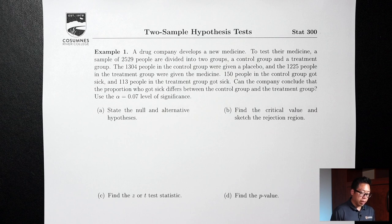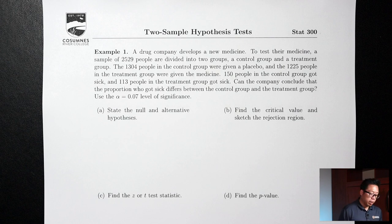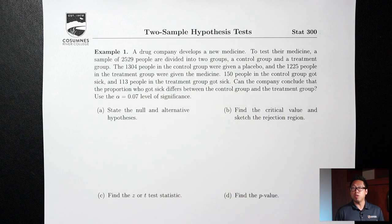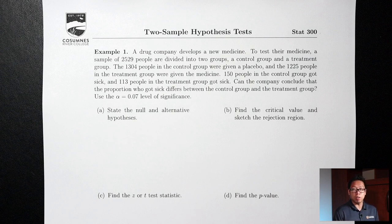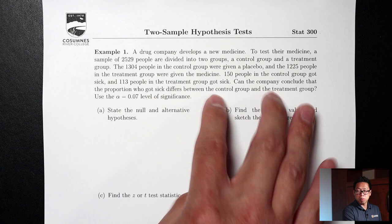Example 1: A drug company develops a new medicine. A sample of 2,529 people are divided into a control group of 1,304 people given a placebo, and a treatment group of 1,225 people given the medicine. 150 people in the control group got sick, and 113 in the treatment group got sick. Can the company conclude that the proportion who got sick differs between the control group and the treatment group? Use alpha = 0.07. Since we have two groups and no mention of mean or standard deviation, this will be a two-proportions situation, which uses Z's.